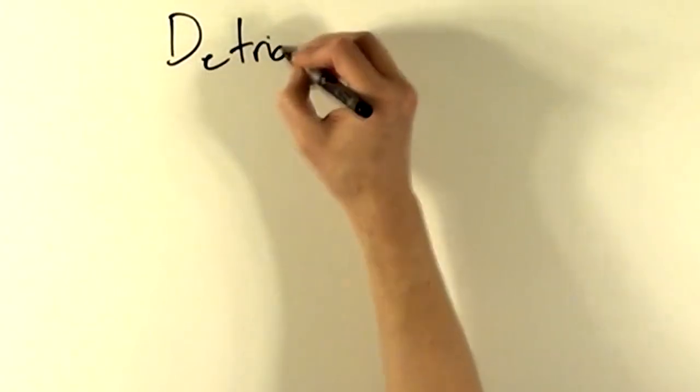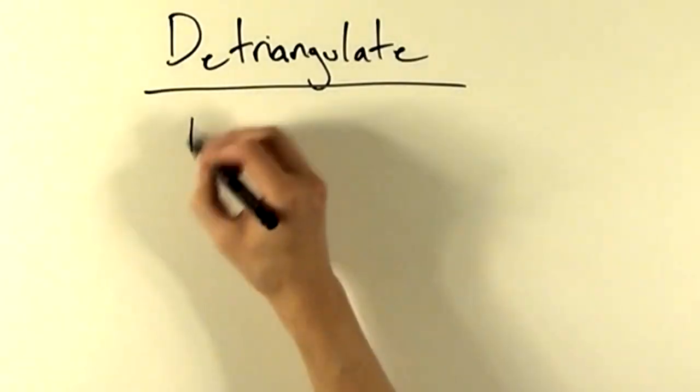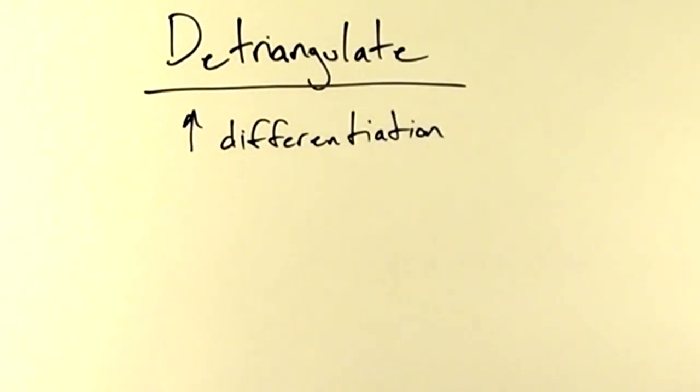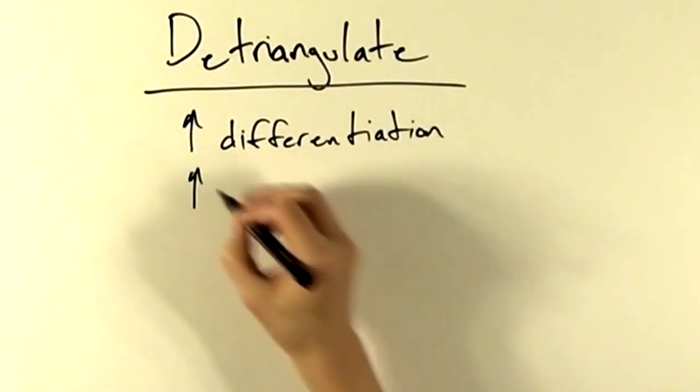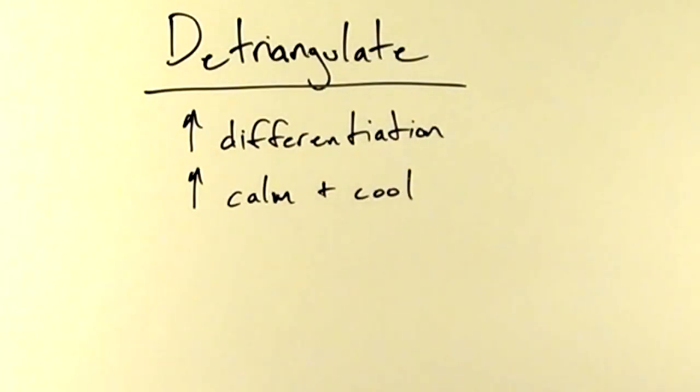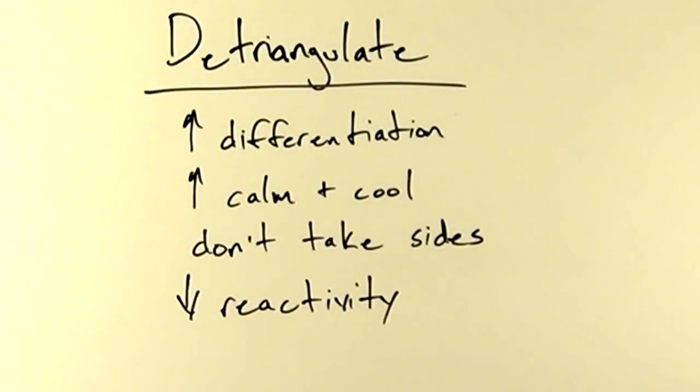You can detriangulate from a dysfunctional triangle by being as differentiated as possible when engaged with the triangle, by being as calm and cool as possible, by not taking sides, by not becoming emotionally reactive, or you can make it a functional triangle by helping the dyad to resolve their problem.